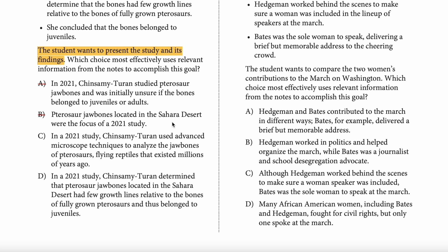Try answer choice C: 'In a 2021 study, Chinasumi Turan used advanced microscopic techniques to analyze the jaw bones of pterosaurs, flying reptiles that existed millions of years ago.' Does answer choice C present the study and its findings? No — there are no findings there. What does answer choice C do? It describes the techniques — the methodology. And they could ask a different question: 'Which presents the methodology of the study?' Then answer choice C would be great. But they're asking about presenting the study and its findings, so far it's neither A, nor B, nor C. Do you see how specific these questions are?